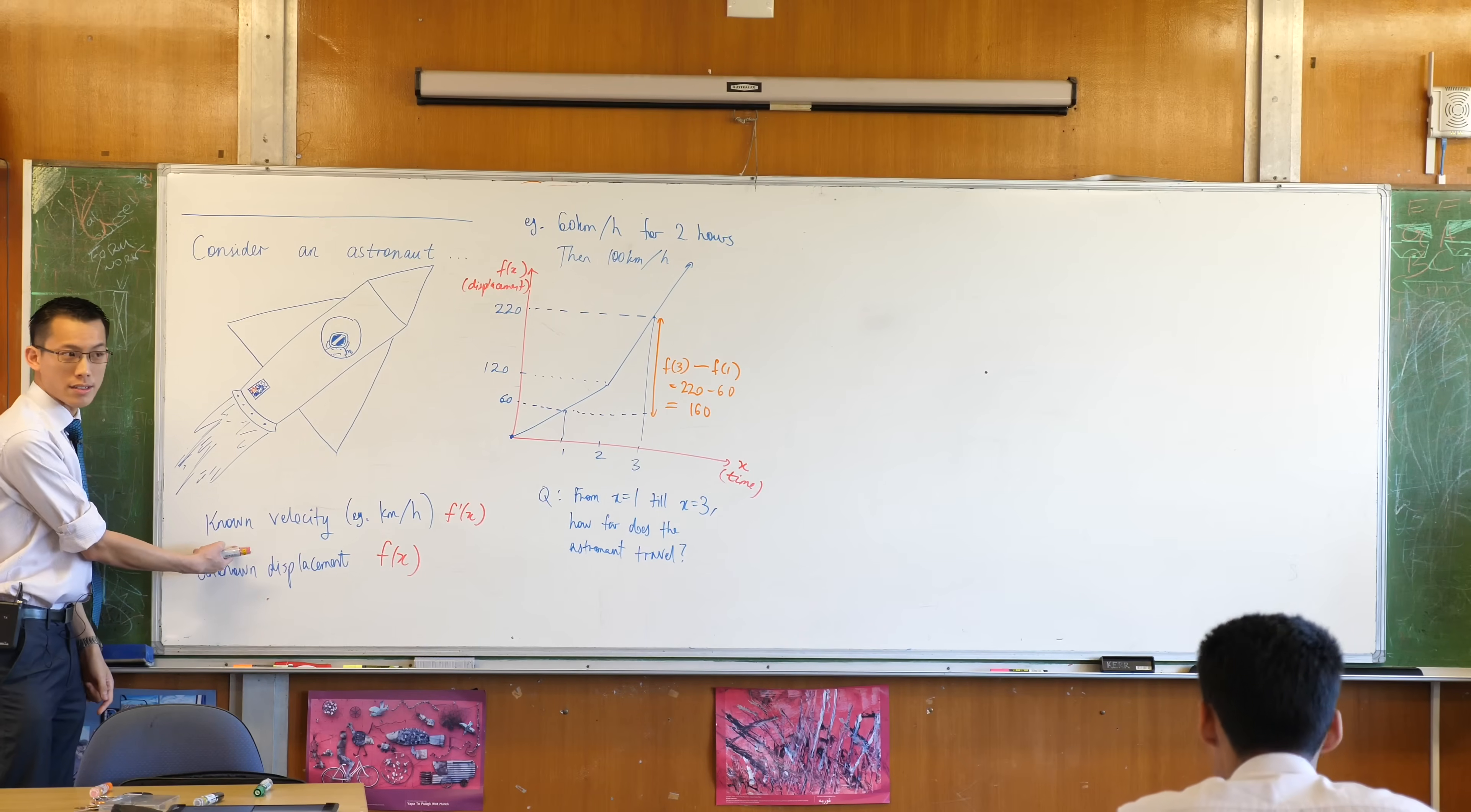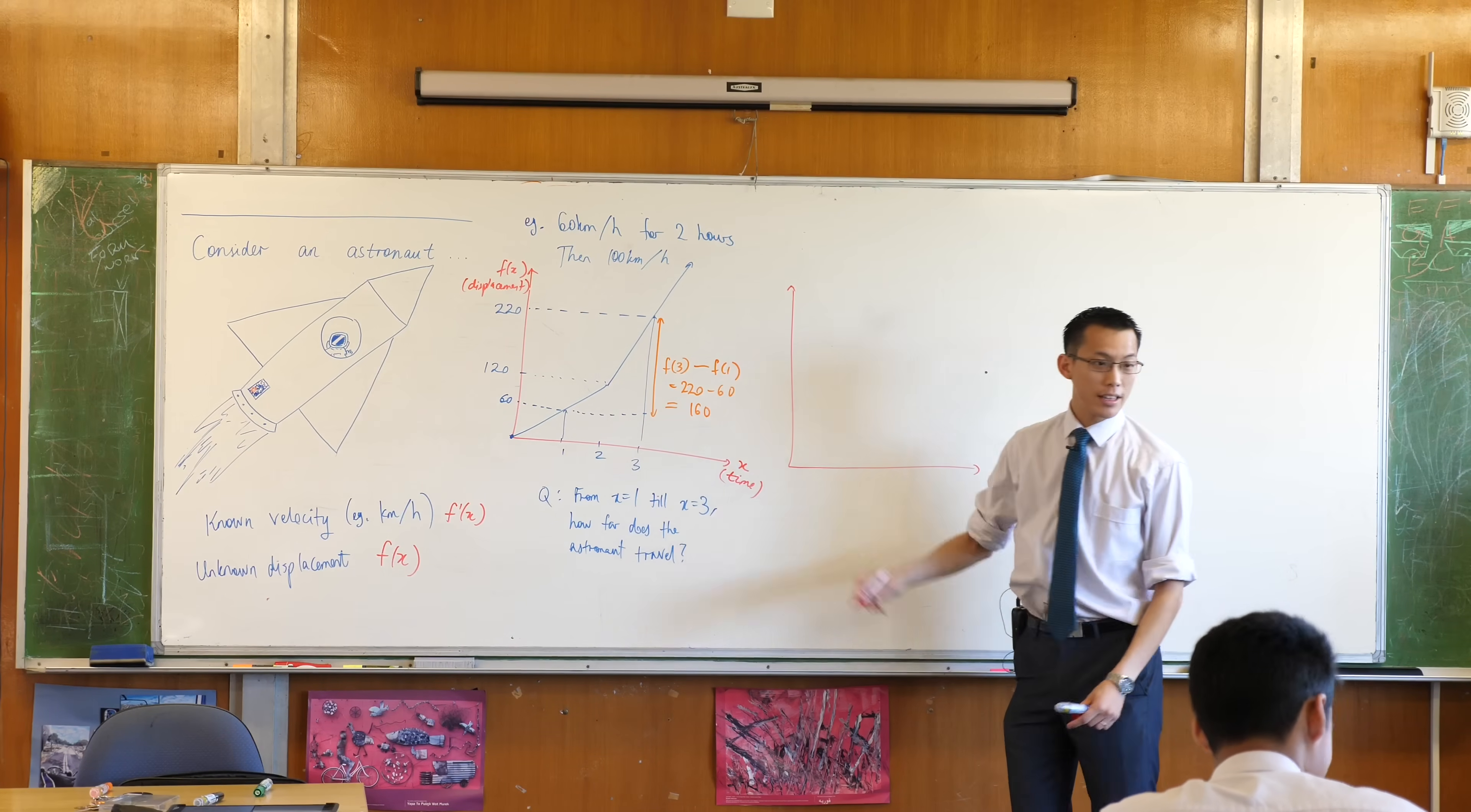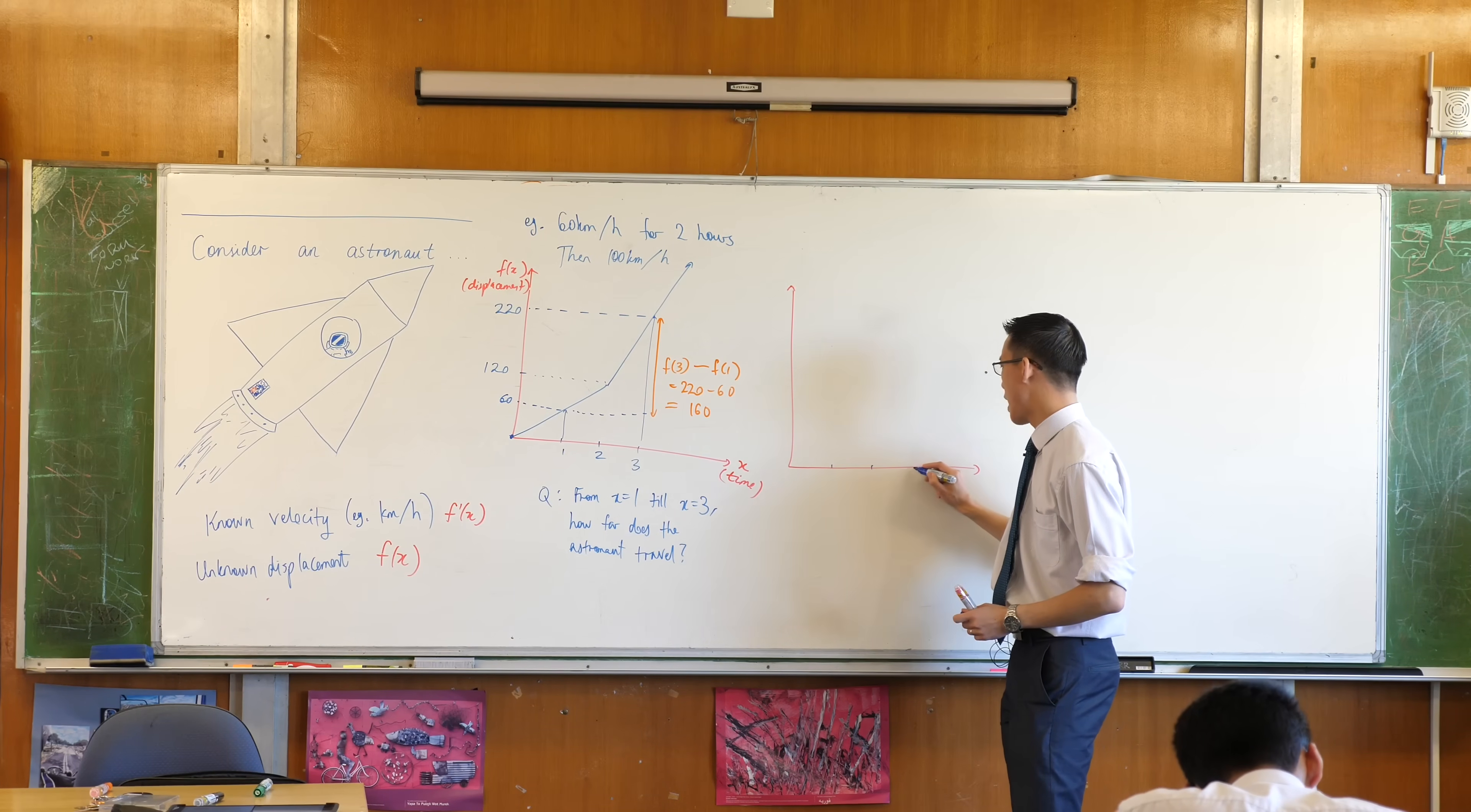The reason why is because I know what velocity is, so this will actually be very easy to graph. Draw yourself a new set of axes, maybe directly underneath if you can - it'll be easier for you but I've run out of space. I'm going to mark out the same time coordinates: one, two, and three.